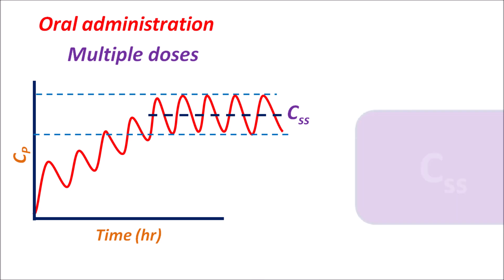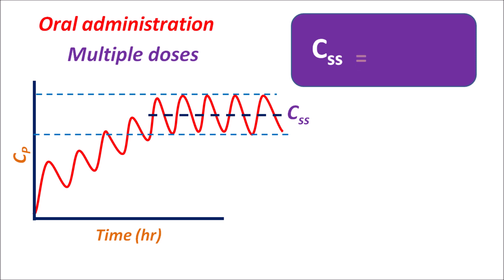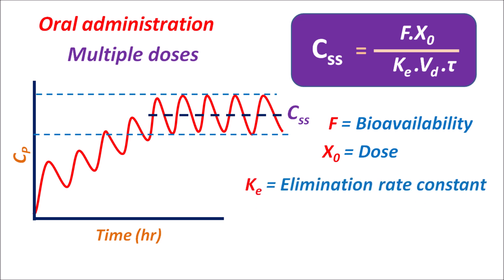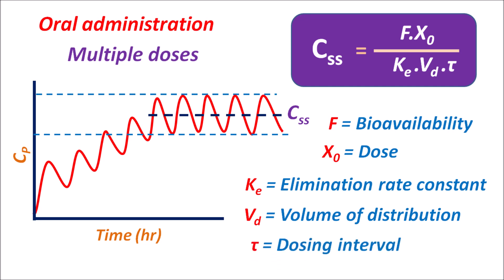We can calculate CSS using the formula: CSS = F × X0 / (Ke × Vd × tau), where F is the bioavailability, X0 is the dose required to maintain steady state plasma concentration, Ke is the elimination rate constant, Vd is the volume of distribution, and tau is the dosing interval.